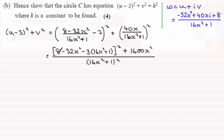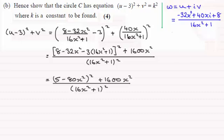Next I'll just clean up the inside of this bracket and if you do that you should find you get (5 - 80x²). So we've got (5 - 80x²)² plus then the 1600x².